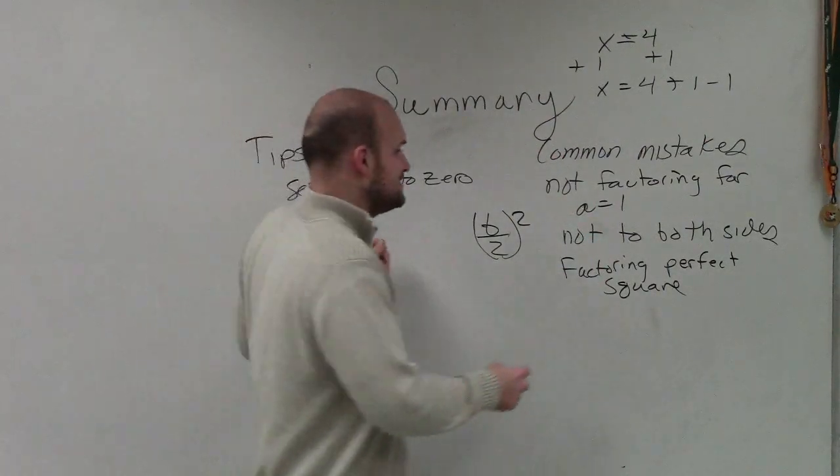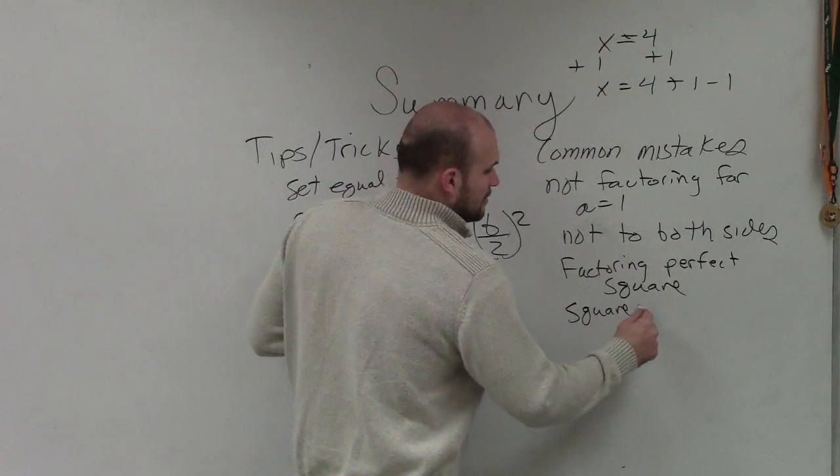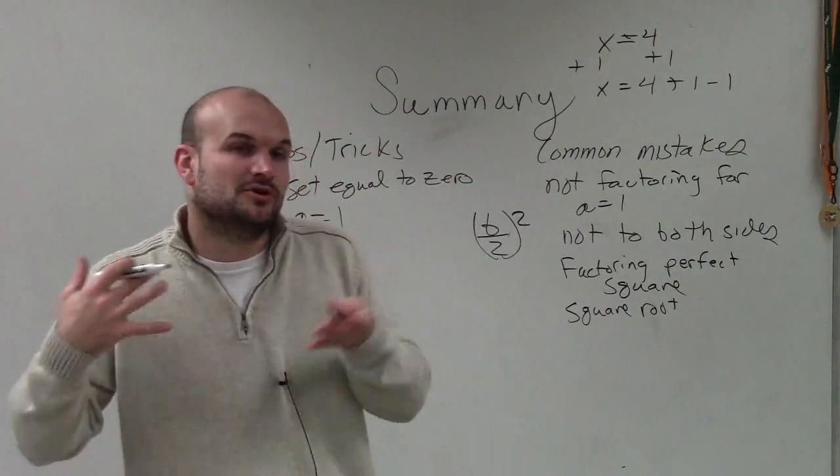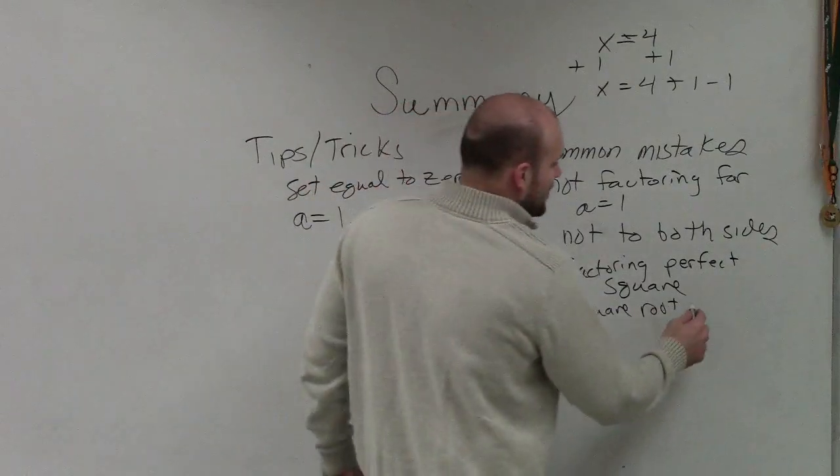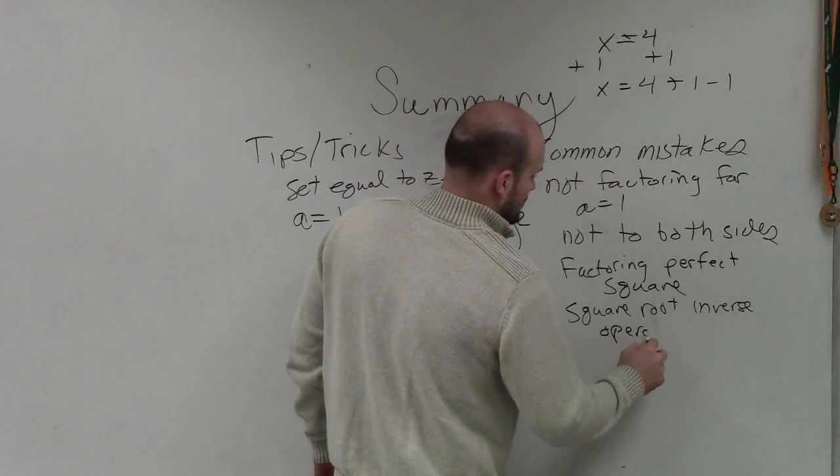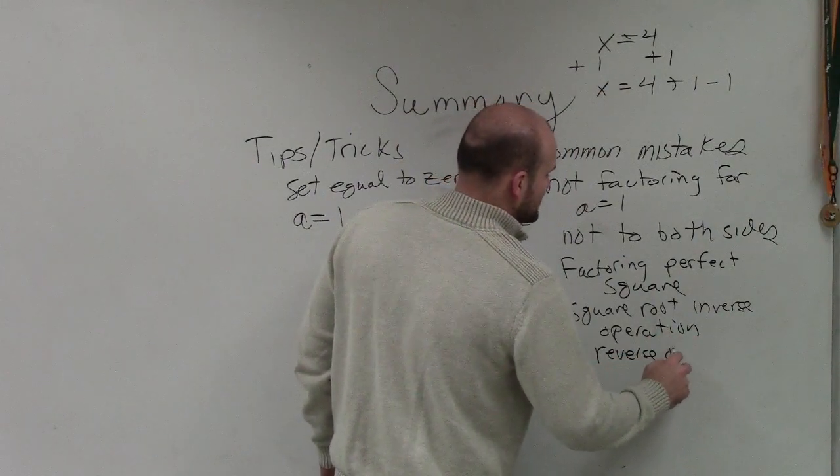The other thing that I would see is using your square root method. So when you're solving, you have a binomial squared. Now you isolate your variable. You have to do your square root method by using your inverse operations and using the reverse order of operations.